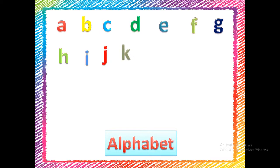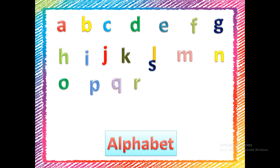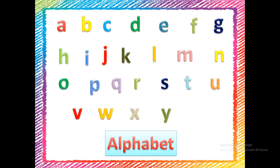They have different shapes and positions when written on four-line paper. According to their different shapes and positions on four lines, a separate name is given to similar shaped and positioned letters. What are those names?